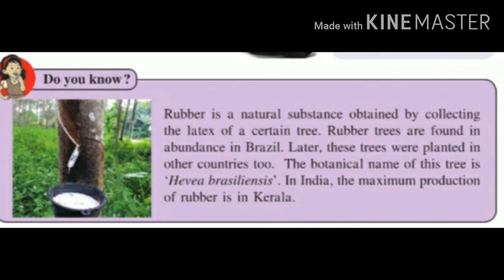Rubber is a natural substance obtained by collecting the latex of certain trees. These trees originated in Brazil and were later planted in other countries too. The botanical name of the rubber tree is Hevea brasiliensis. In India, the maximum production of rubber is in Kerala.